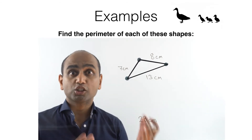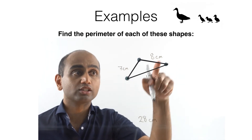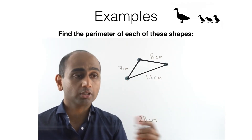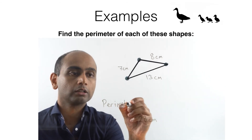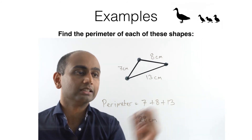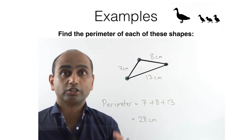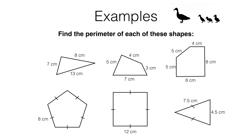And there's a much quicker way of doing it than using a piece of string. You can simply add up the lengths of each side of the shape. So in this particular case, the perimeter works out to be 7 plus 8 plus 13 centimeters, and that gives us 28 centimeters. So now we know how to find the perimeter of a shape — it's simply the distance all the way around the outside, and we can find that by adding up the lengths of the sides.